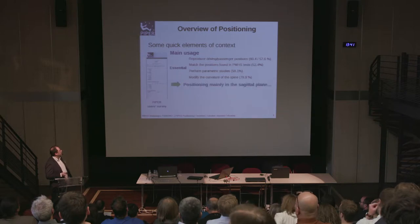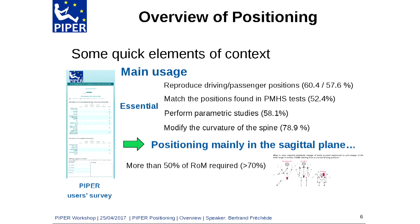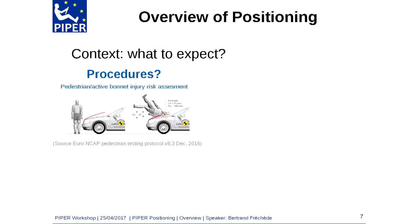There were specific requirements such as modifying the curvature of the spine, but mainly the focus was on positioning the HBM in the sagittal plane. An interesting point was that more than two-thirds of users wanted to apply quite large changes in posture — for example, more than 50% of range of motion for trunk flexion — so significant postural changes.